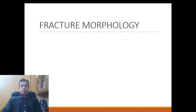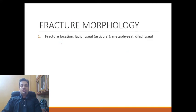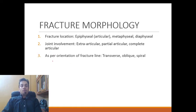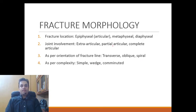Moving on, we have to study fracture morphology. Fracture morphology is divided into four types of classifications: first, fracture location — whether epiphyseal, metaphyseal, or diaphyseal; second, joint involvement — extra-articular, partial articular, or complete articular; third, orientation — how the fracture line lies with respect to the longitudinal axis of the bone, which could be transverse, oblique, or spiral; and fourth, complexity — depending on how the bone is broken into one piece, multiple pieces, or anything in between.